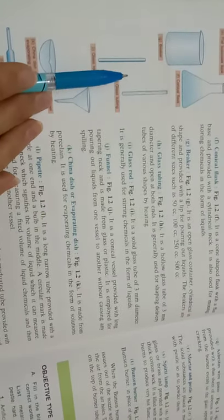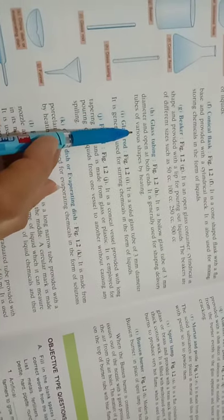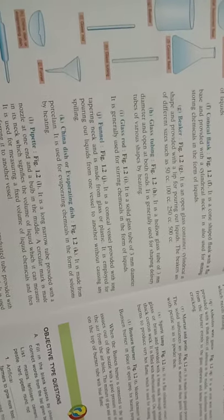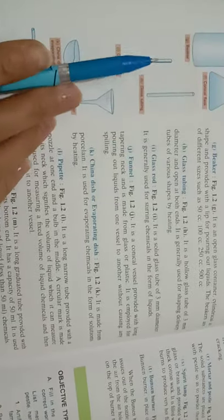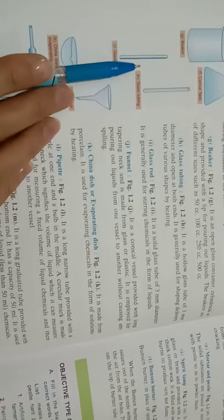This is glass tubing. A glass tube is used like a straw. It is generally used for shaping delivery tubes of various shapes by heating. We also have the glass rod, which is solid but made of glass, so we can use it for stirring.